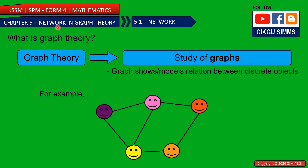Chapter 5: Network in Graph Theory, section 5.1 Network. First, what is graph theory? In mathematics, graph theory is the study of graphs. This is a graph, and this graph shows the relations between objects. The line means the relationship between the objects.